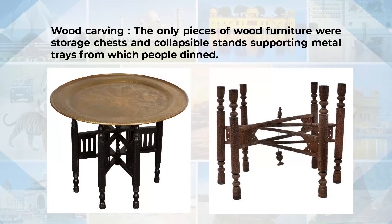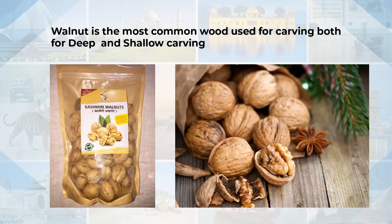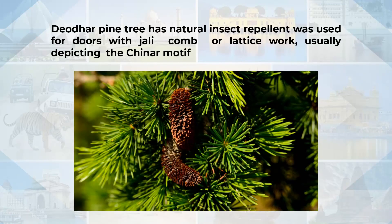The next handicraft is woodcraft. In olden times, the only pieces of wooden furniture popular were for storage — chests and collapsible stands which supported metal trays for dining. Now woodcraft and carving is used in many other ways. For example, in Kashmir, walnut is the most common wood used for carving, both for deep and shallow carving. The deodor pine tree has natural insect repellent properties and is used for doors and jali or lattice work.